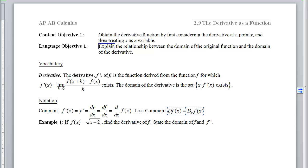This is section 2.9, the derivative as a function. In this section we build on what we've done in sections 2.7 and 2.8. Now we are going to obtain the derivative function by first considering the derivative at a point x, and then treating x as a variable. So instead of just finding the derivative at a particular point where x was a, now we're going to let x vary, and it will create a new function called the derivative function.